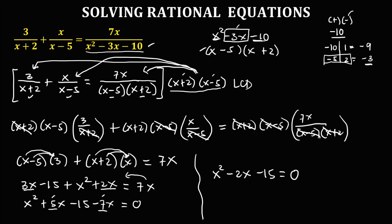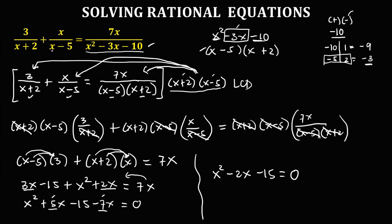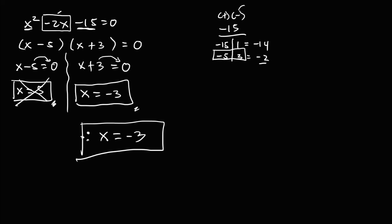But first, we need to check the solutions. Take note that if x equals 5, the denominator (x minus 5) becomes 0 — that's undefined. So therefore, x equals 5 is not part of the solution. Therefore, x equals negative 3 is the only solution of this rational equation.